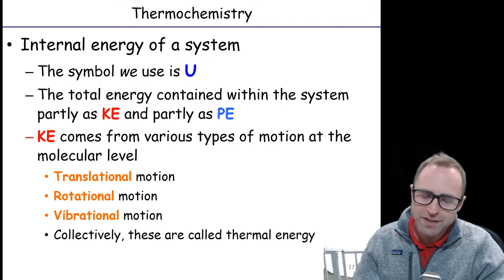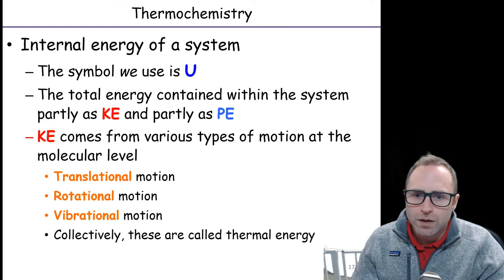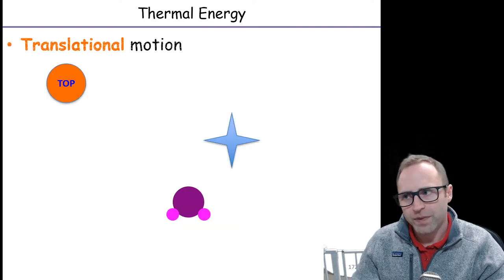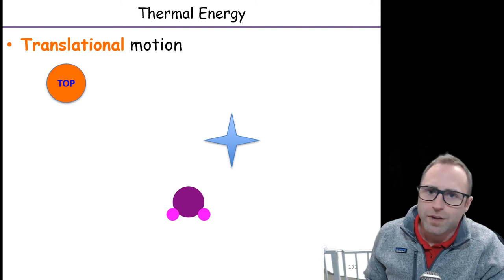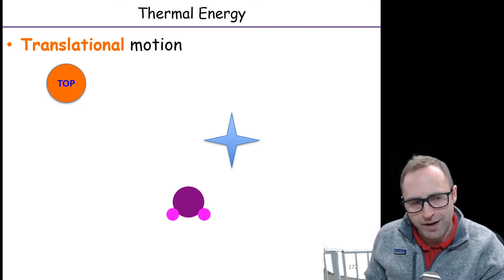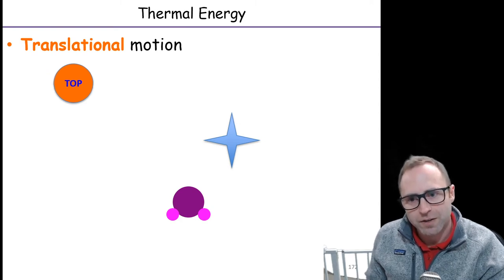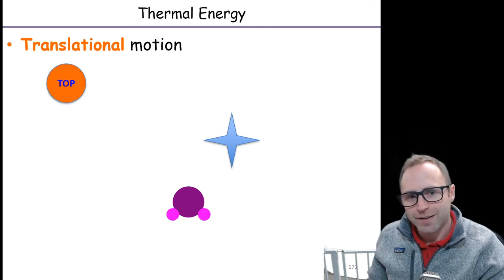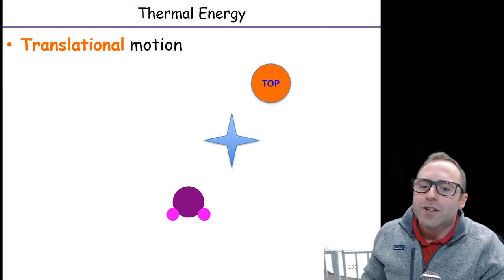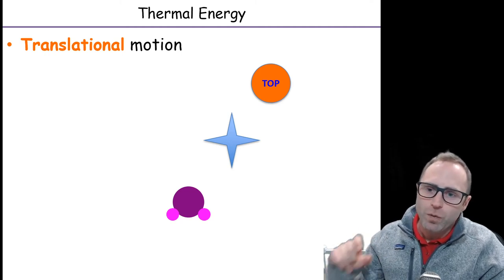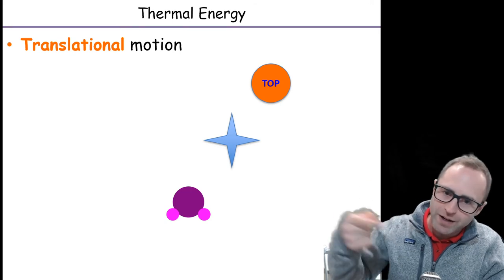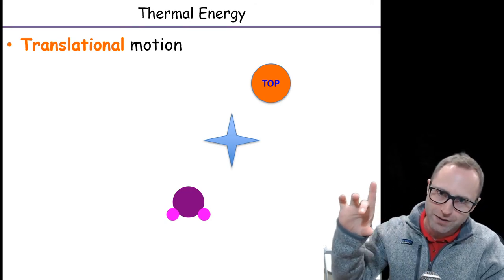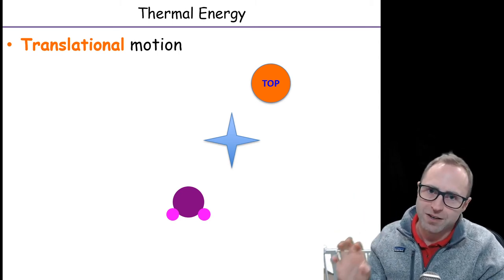Let me show you examples of translational, rotational, and vibrational motion. Here's an example of translational motion — a nice little orange ball in the PowerPoint animation. With translational motion, all we are doing is moving the molecule from one place to another. You can think of it as just sliding. It's not spinning or anything else like that. It's literally just sliding across. That's our definition of translational motion.